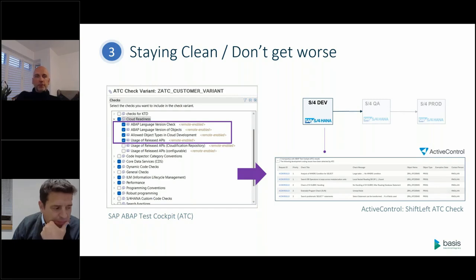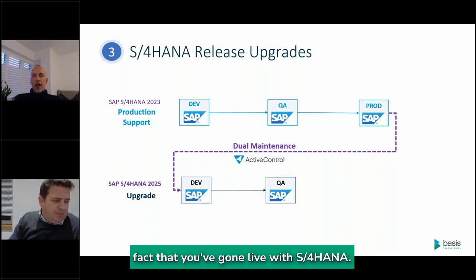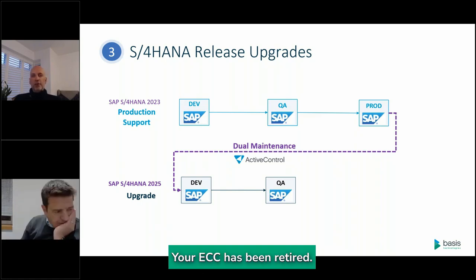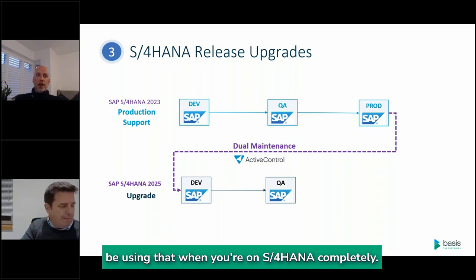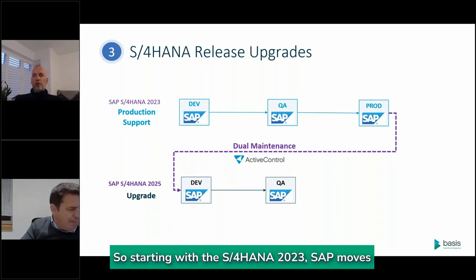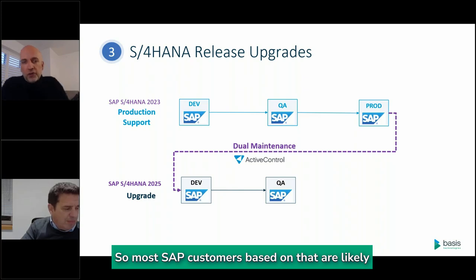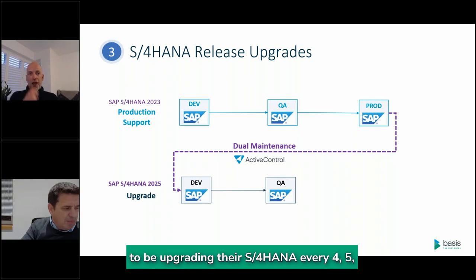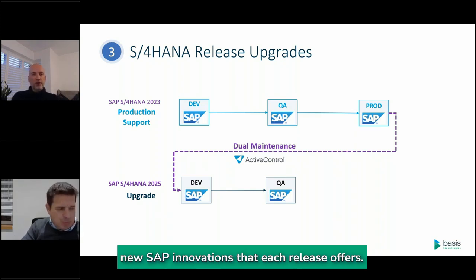Another thing worth mentioning: once you've gone live with S4 HANA and your ECC has been retired, a lot of what we've discussed to automate dual maintenance you'll almost certainly still be using on S4 HANA. Starting with S4 HANA 2023, SAP moved to a two-year release cycle, with each release maintained for seven years. Most SAP customers based on that are likely to upgrade their S4 HANA every four to seven years, depending on their appetite for new innovations.